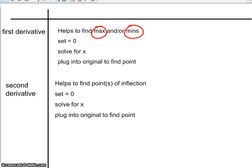The second derivative is going to help us find our point or points of inflection. Places where we're changing in terms of concavity. Same process. Set it equal to 0, solve it for x, and then again we're going to plug it into my original to find my point for my graph.